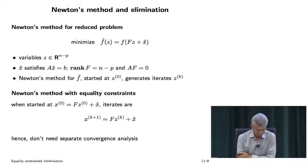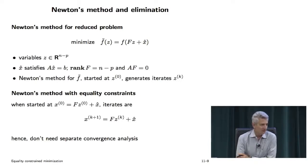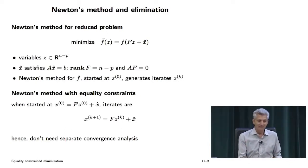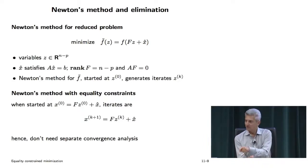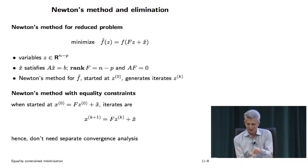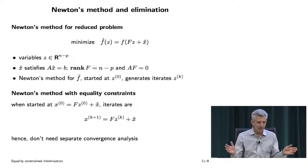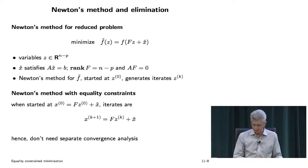We don't have to do any analysis of this, and the reason is a commutative diagram. If you take a problem with equality constraints, eliminate the variables, and then apply Newton's method — you get a commutative diagram with applying Newton's method with equality constraints directly. It's identical. And that means we don't have to do any analysis at all, because we already know it all, including for self-concordance.